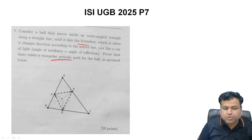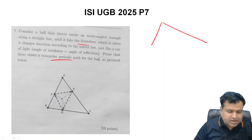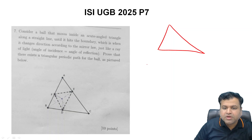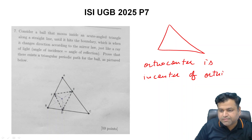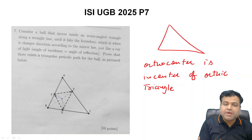This is a very simple property. For any acute angle triangle — and the reason we need acute angle will be obvious in a few seconds — consider that we know the orthocenter of any triangle is actually the incenter of the orthic triangle.